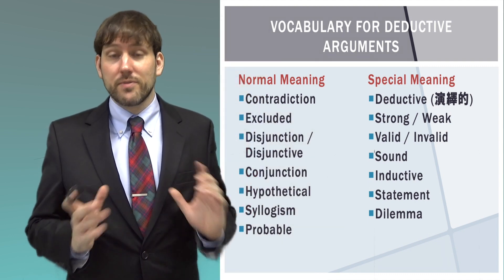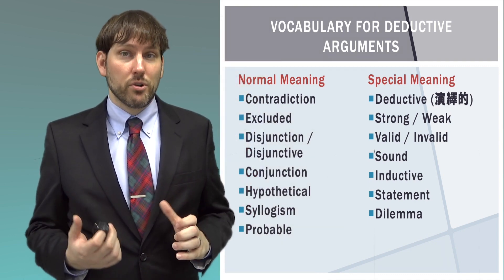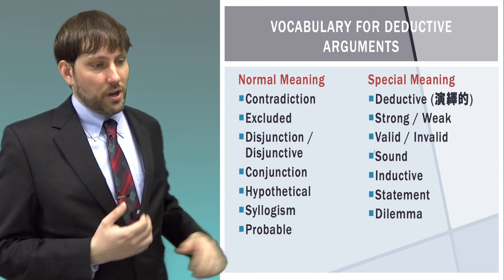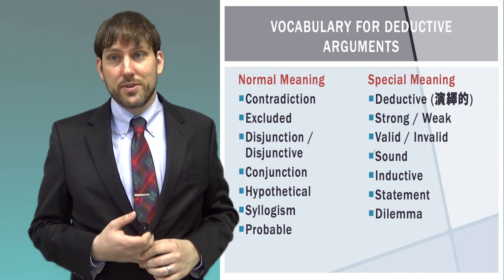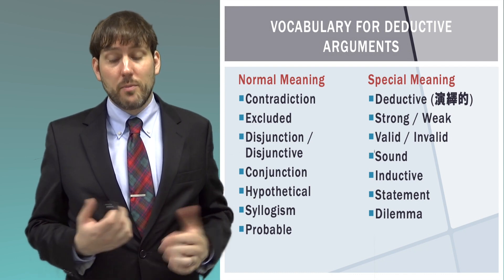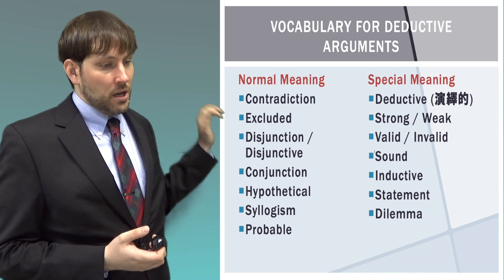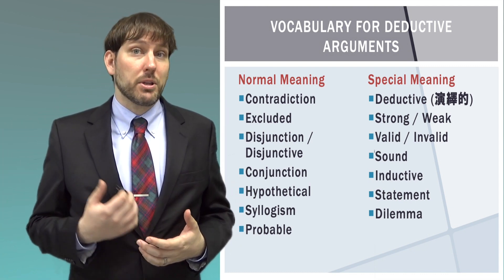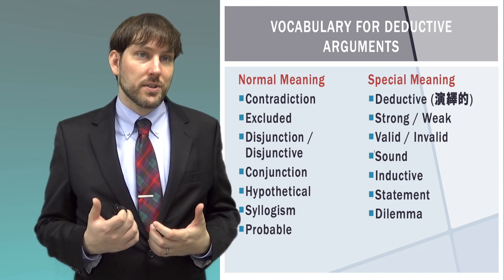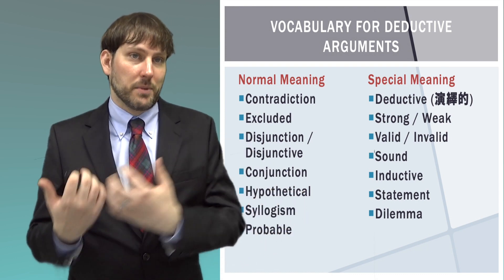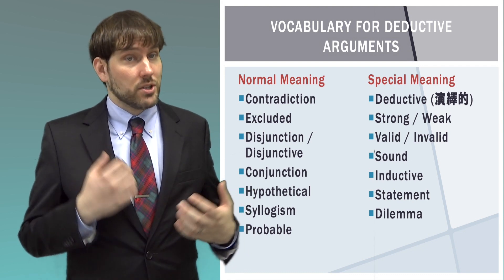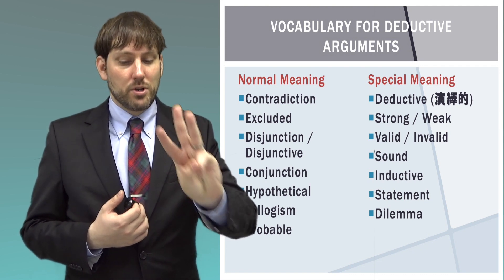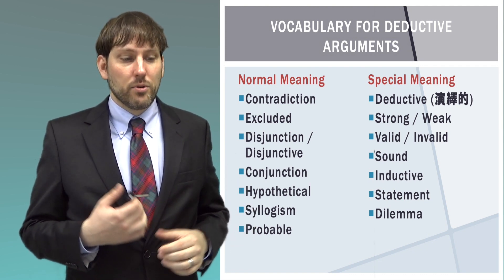One thing that's important for this video is that we will use some words in their normal meaning and some in a special meaning. In the normal meaning: contradiction means two things that can't be true at the same time; excluded means you have to pick one or the other; disjunction or disjunctive means 'or'; conjunction means 'and'; hypothetical means 'if this is the case, then something else' — basically 'if-then'; syllogism is a term from Aristotle for an argument with three terms; and the word probable.